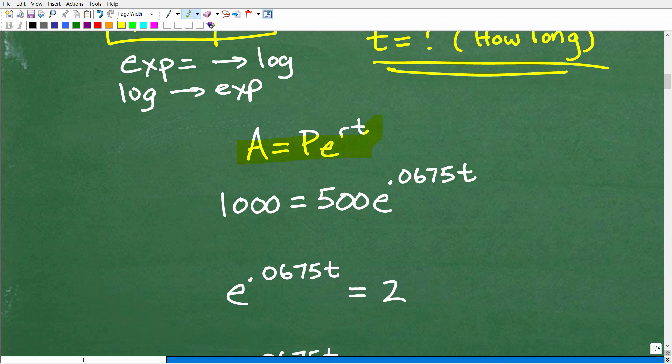So here is our formula. Let's go ahead and plug in our respective values. So our amount is 1,000, right? That's going to be the final amount. But we're starting off with the $500 principal amount. And there is our natural base, E.